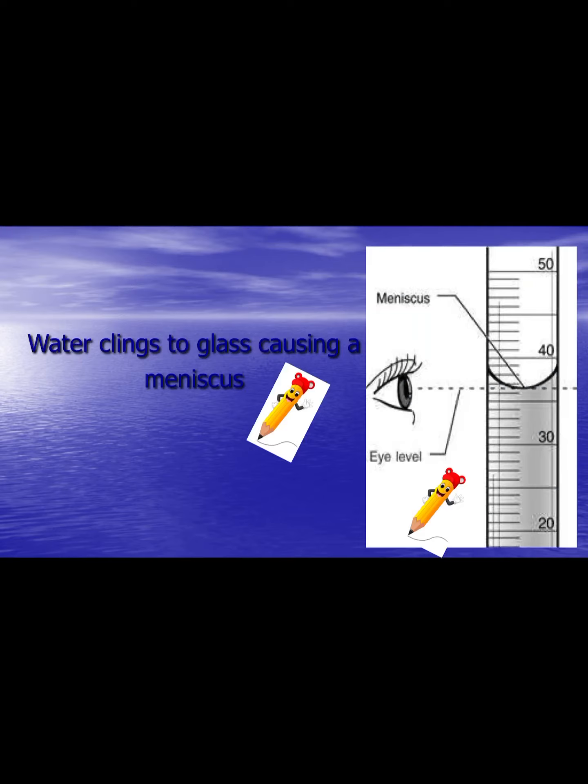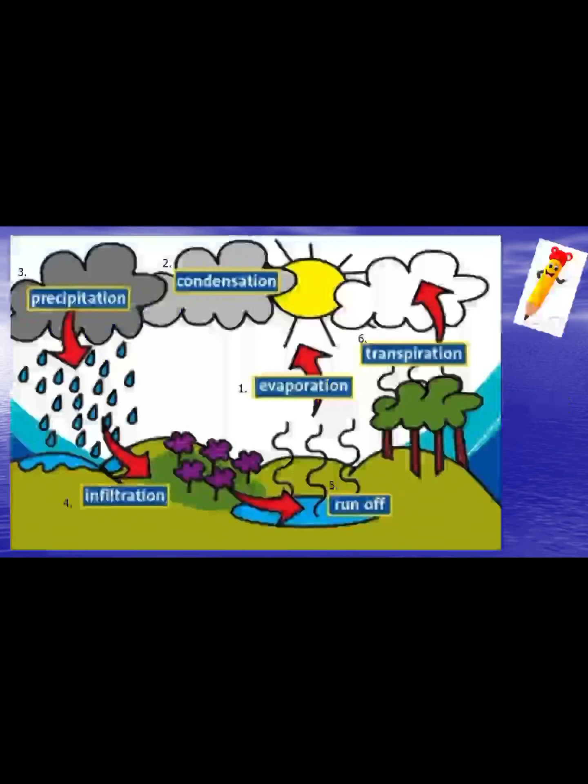The test for water is that blue cobalt chloride paper turns pink. Water generally clings to the glass at the sides, so in narrow tubes like a graduated cylinder you can see where the water clings to the side of the tube and curves up — that's called a meniscus. When reading volumes of liquid accurately, you read the bottom of the meniscus at eye level.